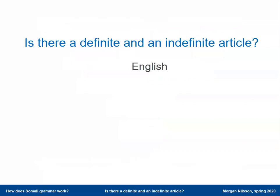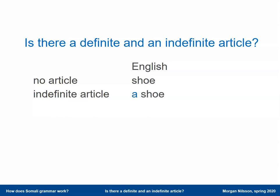If we start by having a look at the English system, we may have nouns in English without any article at all — so bare nouns, as 'shoe' for example. We may add an indefinite article to a noun, for example 'a shoe'. And we may add a definite article to a noun, 'the shoe'.